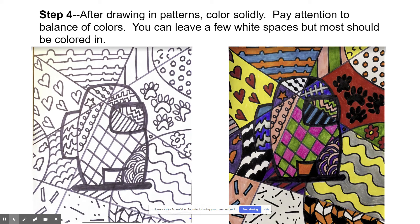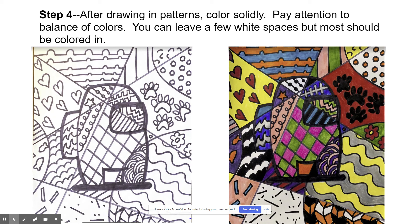Then you color it — you can use markers, colored pencils, or paint. If you paint you might have to go back over the lines again with a black marker, and that's okay. Even with markers I had to go back over some lines with the black marker. Make sure you color nice and solidly. Pay attention to balance — if you leave some white, distribute it around rather than all on one side. I tried to balance my yellows at the top and bottom, and I have solid black balanced around the piece. Try to separate light and dark colors rather than clustering them together.